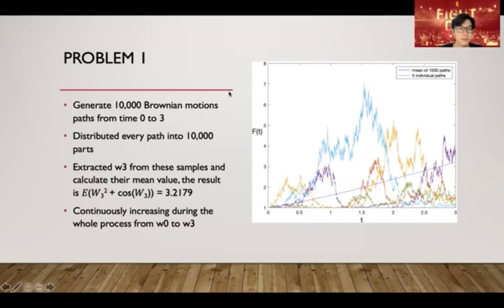Now here is problem 1, and the target for problem 1 is to calculate the expected value of the function. The idea is first we generate 10,000 Brownian motion paths from time 0 to 3, and distribute every path into 10,000 parts. After that, we extracted W3 from those samples and calculated their mean value. The result after the code and calculation is 3.2179.